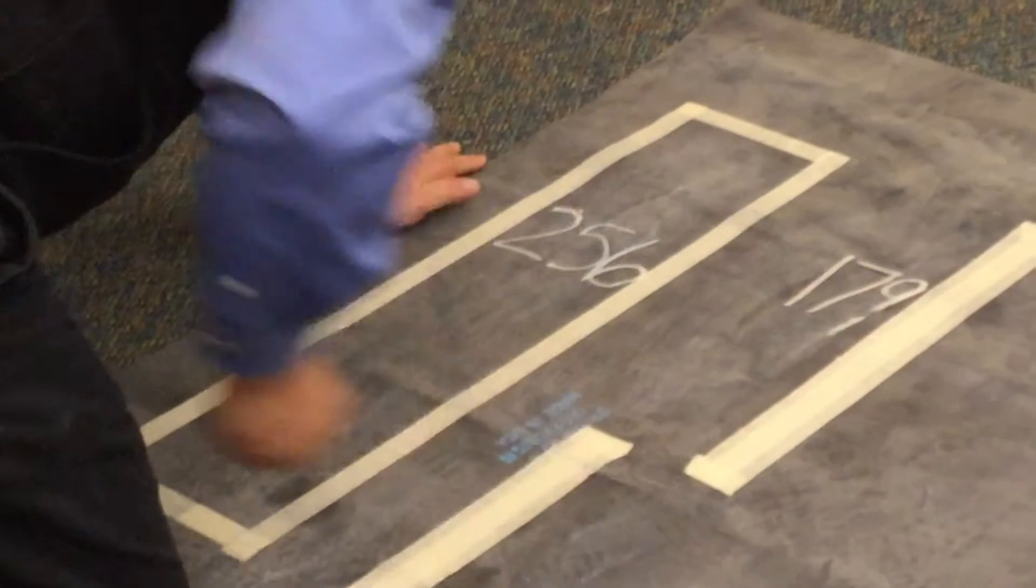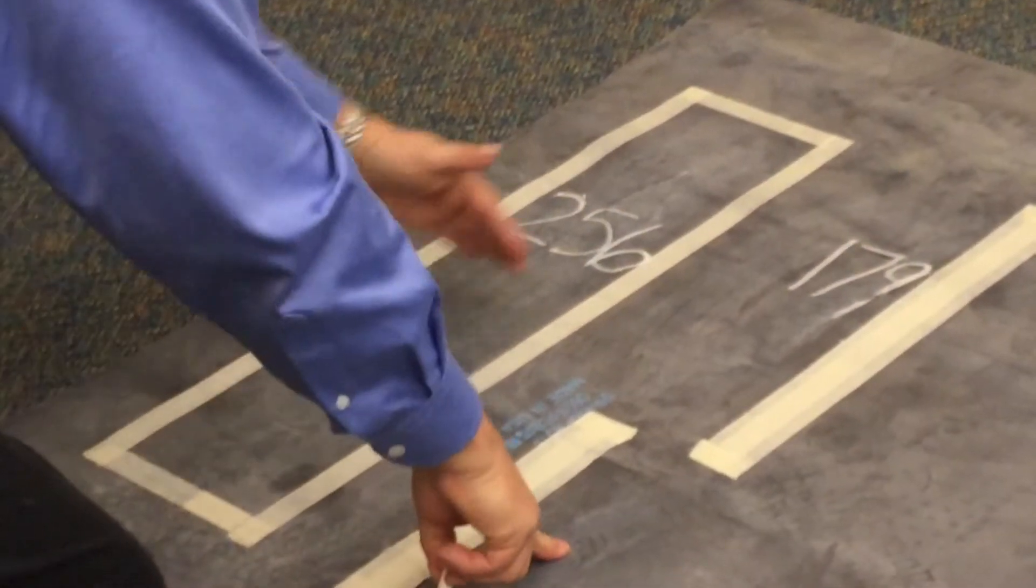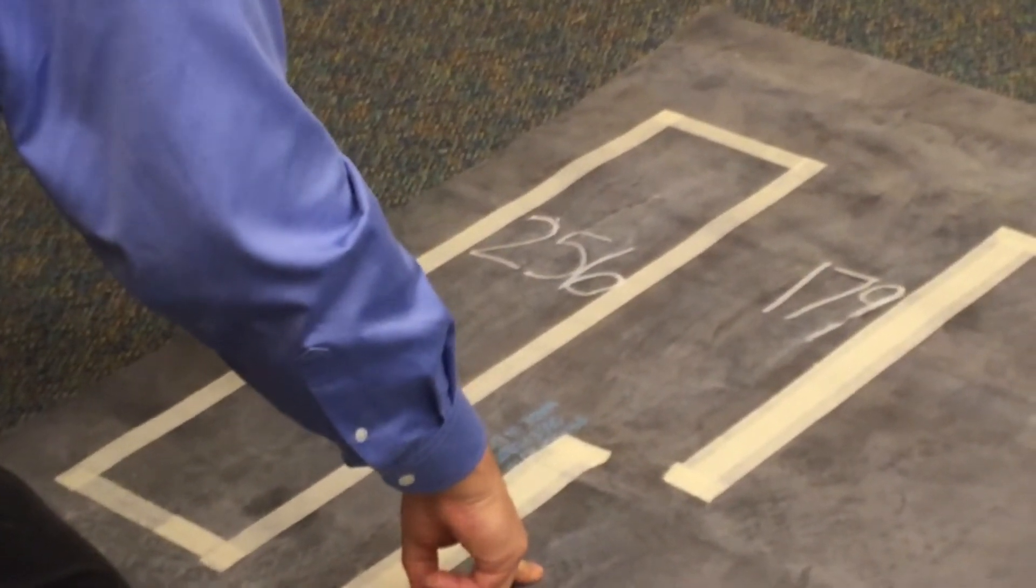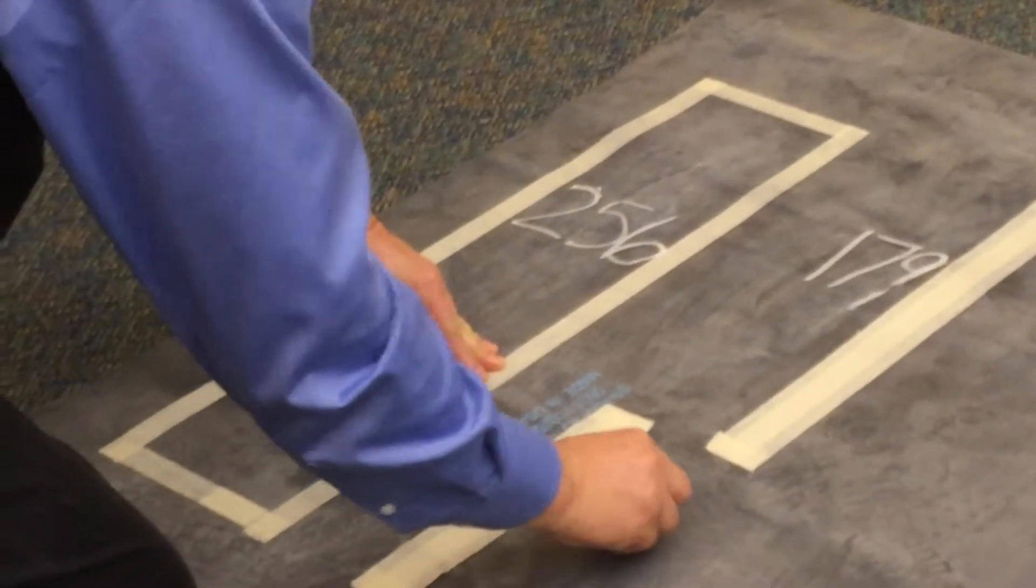179 got picked. Okay, what does that leave in the field? 77. 77 are left in the field.